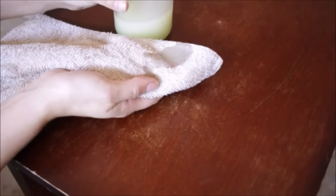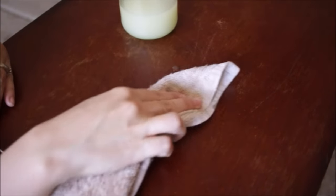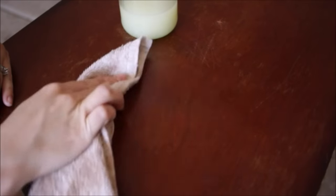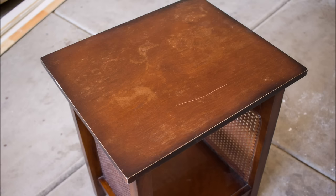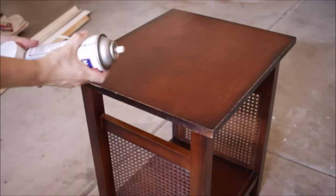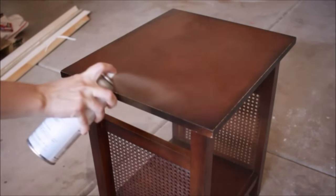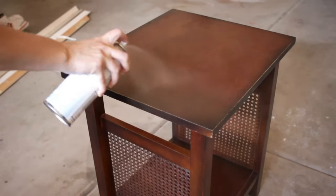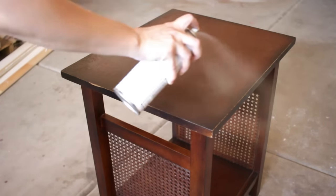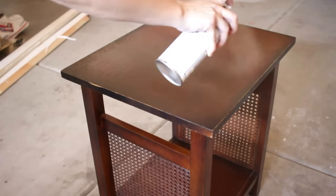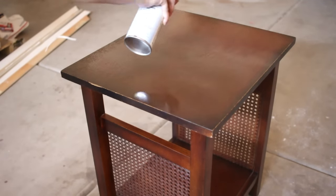If your surface is in really bad condition, you're left with one kind of nuclear option that there's no going back from, but it will make a big difference. You can apply a coat of toner. Toner is basically a translucent coating with a little bit of dye in it, so since it's translucent you'll still be able to see through it, but it will help blend scratches, dings, and even minor discoloration.